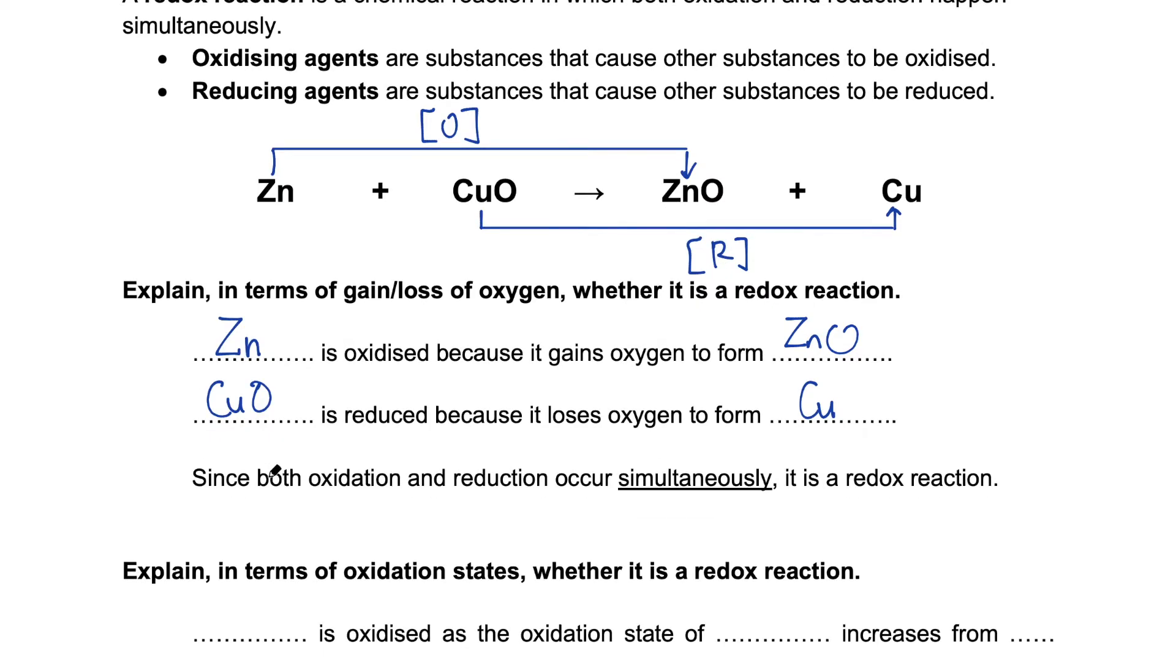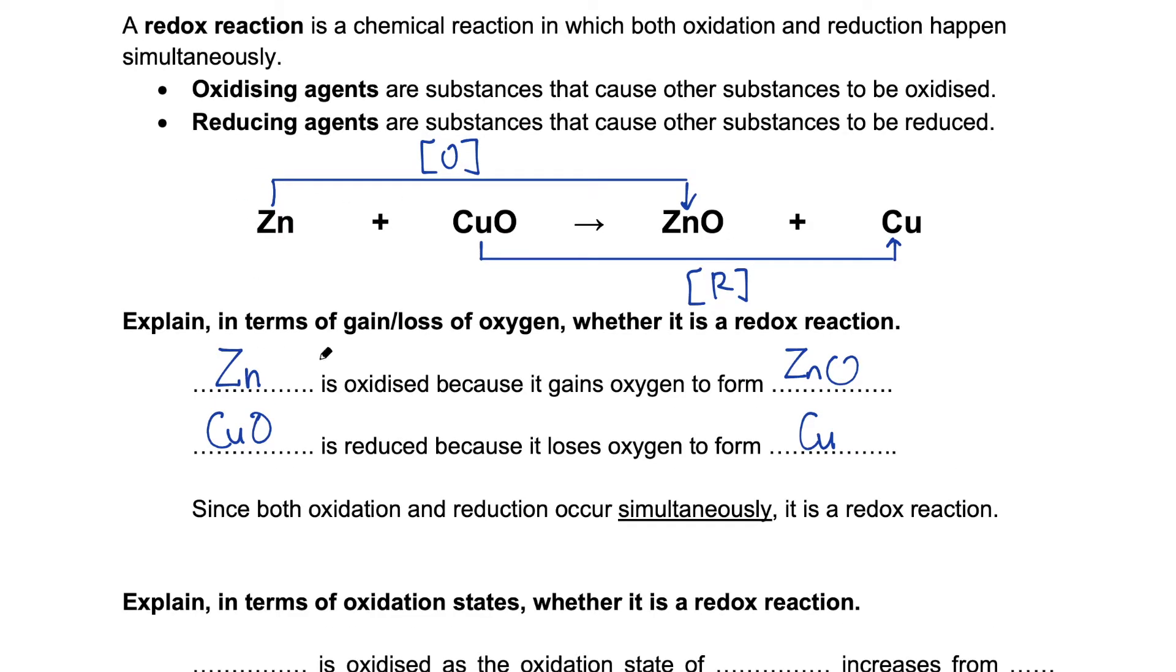So what I've shown you below here is a simple structure that we can use to answer questions in exams. Given that zinc is oxidized, what causes zinc to be oxidized? It must be copper 2 oxide. So copper 2 oxide is the oxidizing agent, while zinc is the reducing agent.